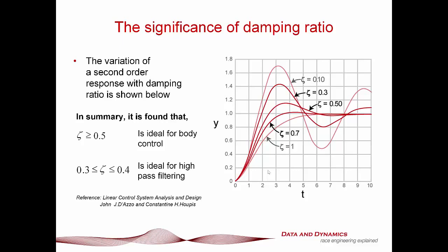Let's talk about the significance of damping ratio. It comes from a second-order Laplace approximation of what a car is doing, and it solves into a simple response curve. A damping ratio of zeta equals 0.7 is what's called critically damped. At zeta equals 1, the system goes straight to a settling point. At zeta equals 0.5, 0.3, or 0.1, we get increasingly oscillating behavior. Key takeaways: a damping ratio greater than 0.5 is ideal for body control; 0.3 to 0.4 is ideal for high-pass filtering — navigating bumps — which is why there's always a low-speed and a high-speed section of the damper.